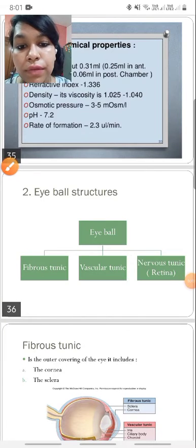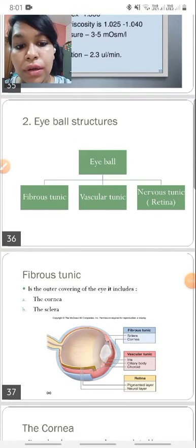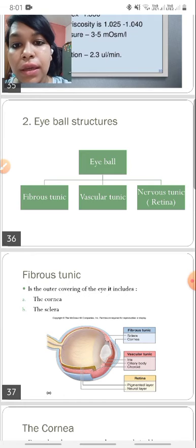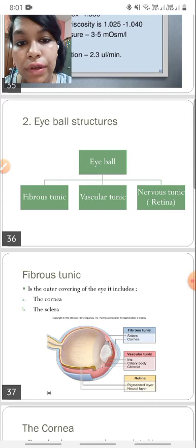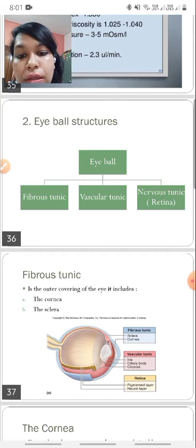Good morning class. Welcome to the second class on the anatomy of the eye. Now the eyeball structures can be subdivided into the fibrous tunic, the vascular tunic, and the nervous tunic, that is the retina.